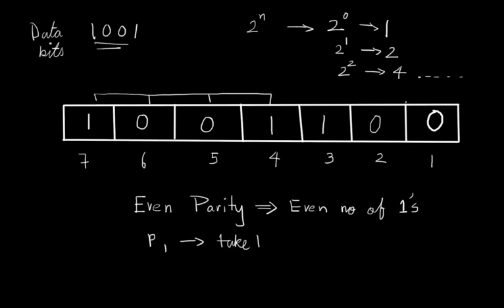So now it is pretty simple. If you want to find out p1, then you take 1, leave 1. So you take 1 into consideration, leave 2, take 3 into consideration, leave 4, take 5 into consideration, leave 6, and take 7 into consideration.